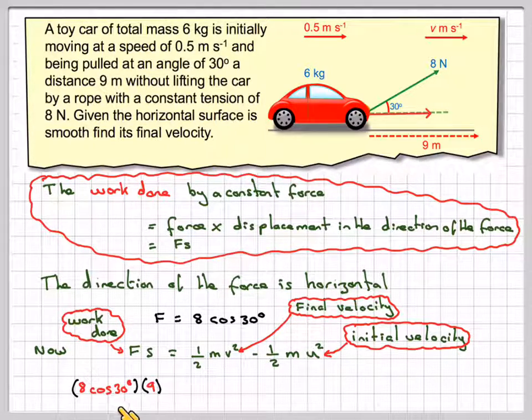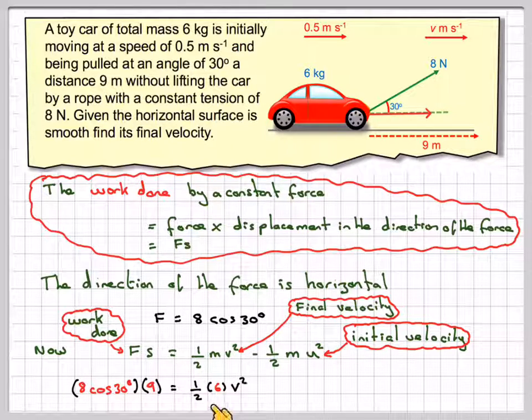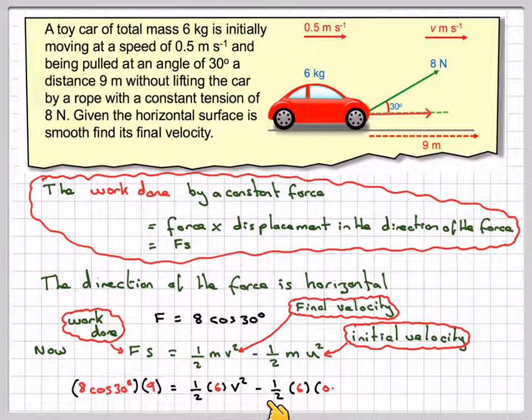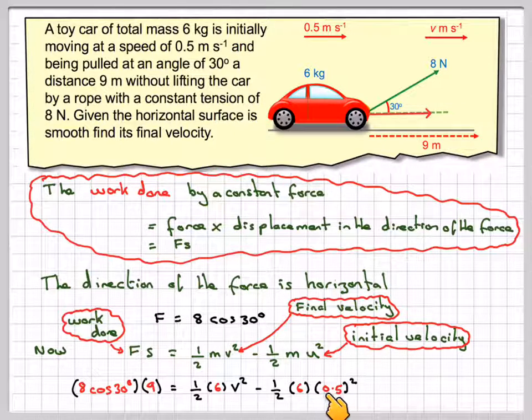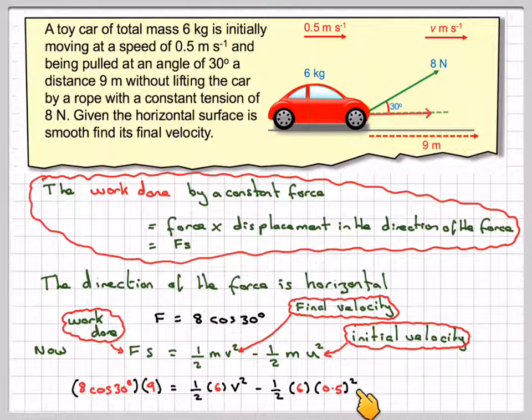So 8 cos 30 degrees times 9, because the force is 8 cos 30 degrees and the displacement is 9, is equal to 1 half times the mass which is 6 times V squared minus 1 half times 6 times the initial velocity which is 0.5, so it's going to be 1 half times 6 times 0.5 squared.